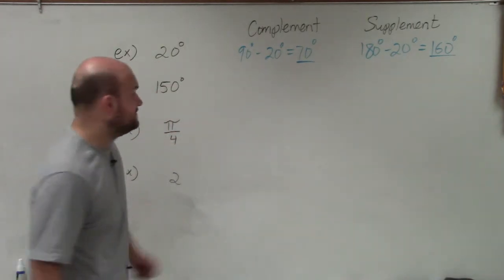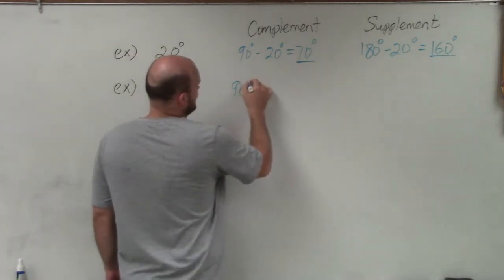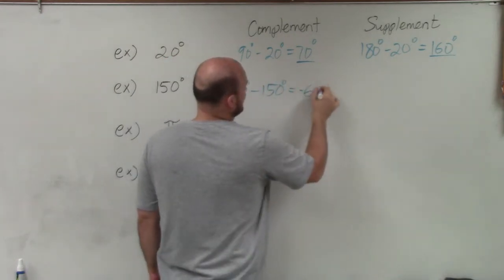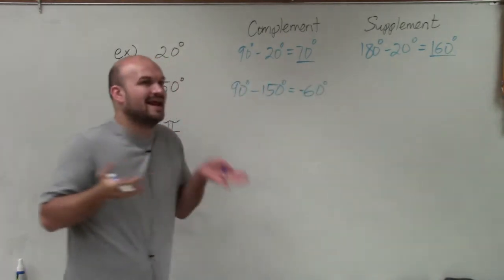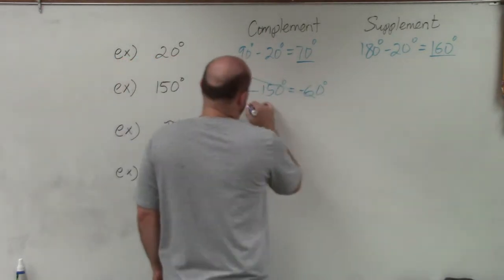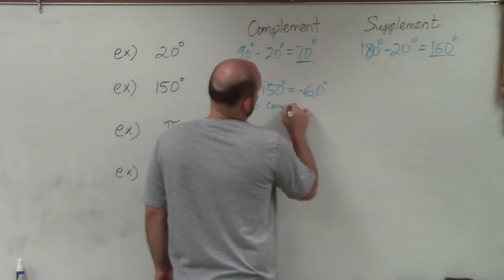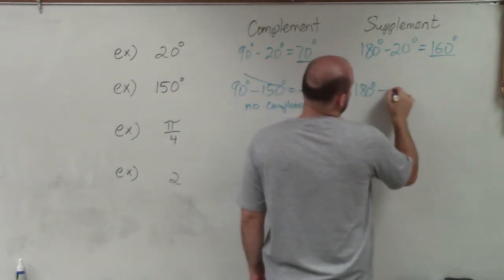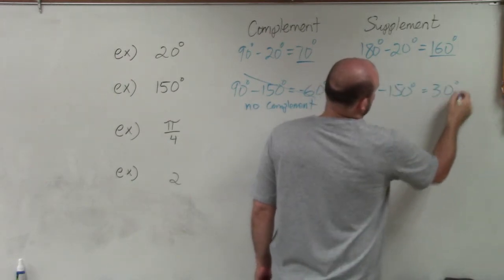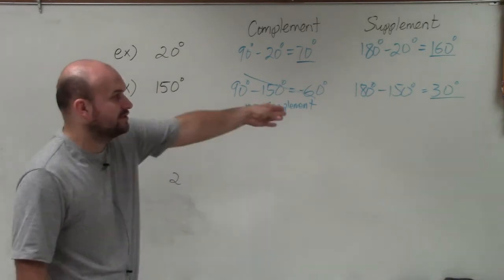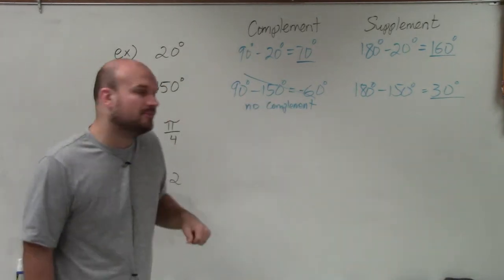Now let's go to 150 degrees. So now I do 90 degrees minus 150 and you can see that that's going to be negative 60 degrees. Well, you can't have a negative angle as your complement, so therefore there's no complement angle. However, for 180 degrees minus 150 degrees, I get 30 degrees. So the supplement angle of 150 degrees is 30 degrees, however there is no complement angle.